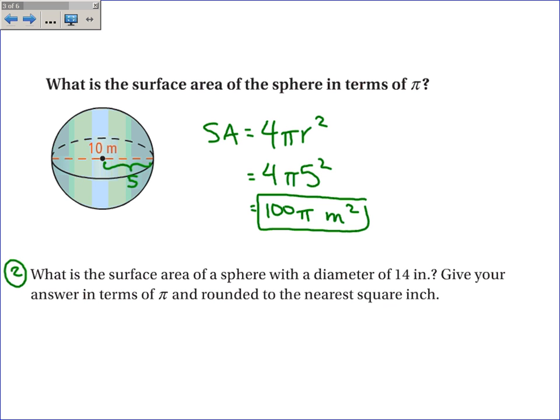Okay, the second one, what is the surface area of a sphere with a diameter of 14 inches? Now, if the diameter is 14, the radius must be 7. Give your answer in terms of pi and round it to the nearest square inch. Again, the surface area is 4 pi r squared. The radius is 7 inches.